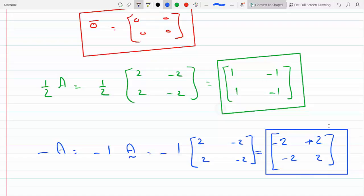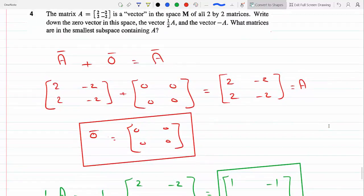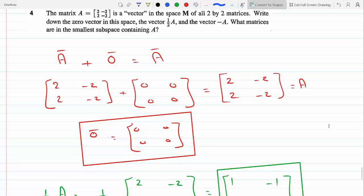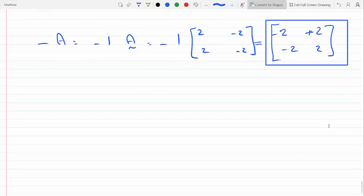Okay, and then it says what matrices are in the smallest subspace containing A? Well, these are the scalar multiples of A. So any matrix in the form of some constant K times matrix A is the smallest subspace containing A.